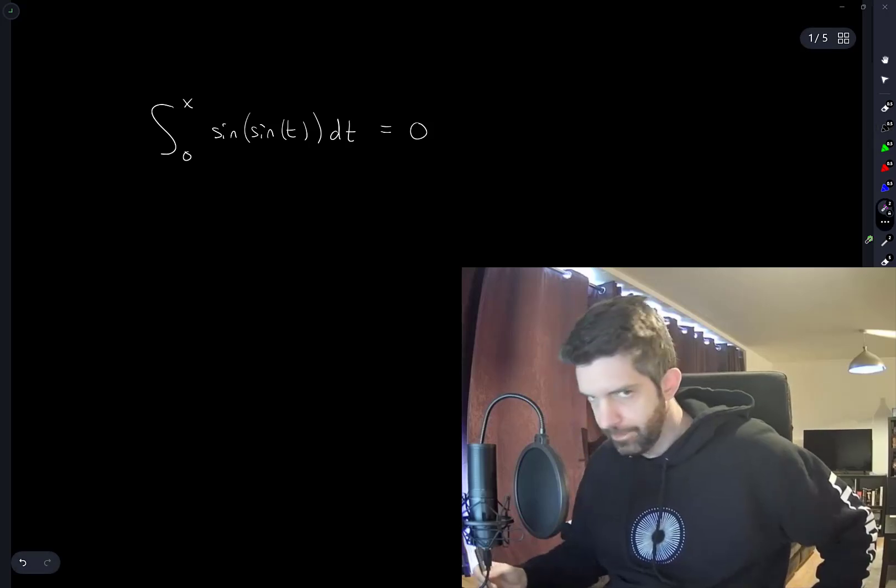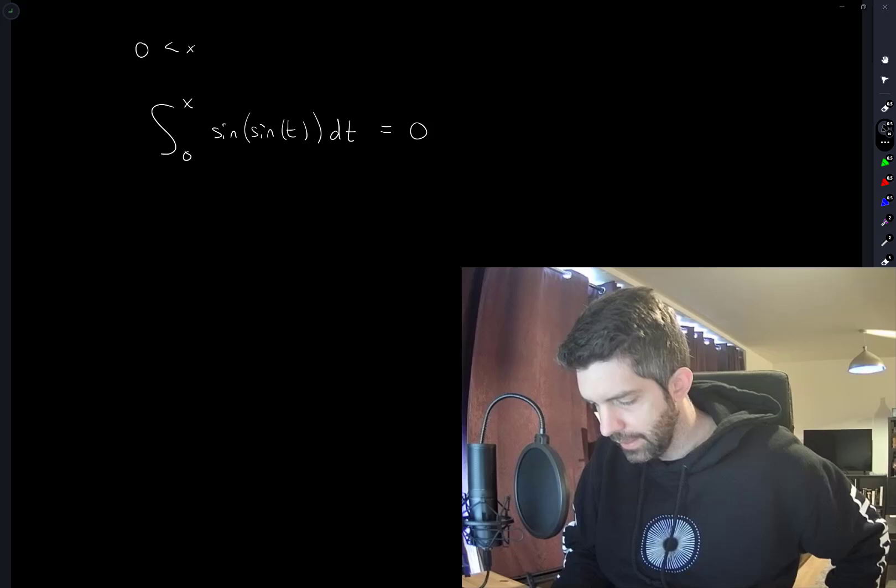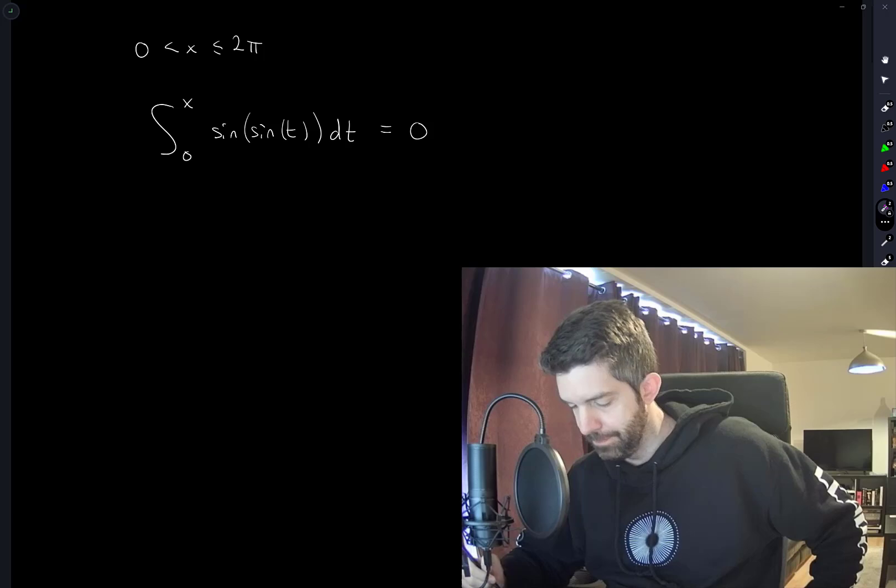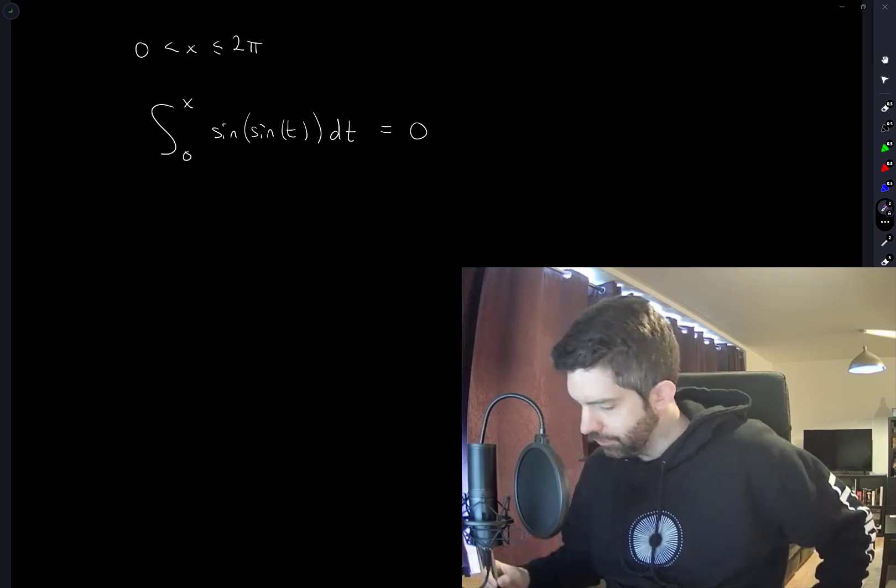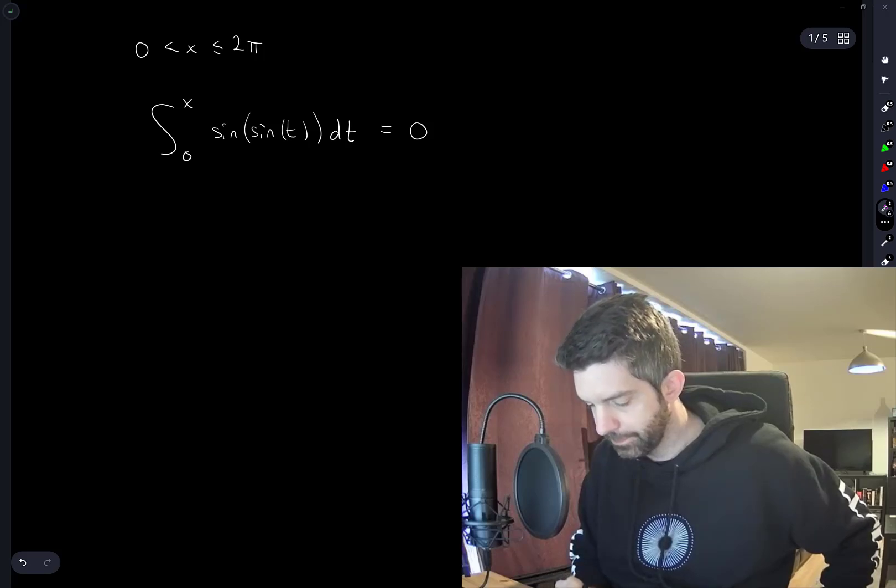Okay, so we have 0 less than x less than or equal to 2 pi. So of course when x is equal to 0, this is equal to 0. But we're not concerned with that solution.